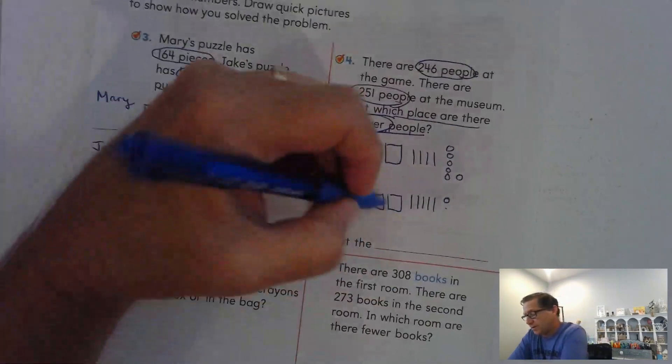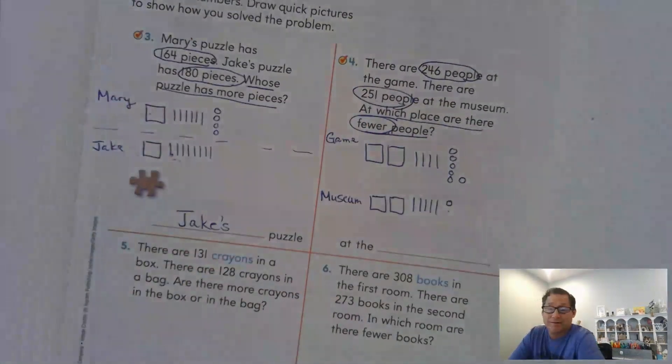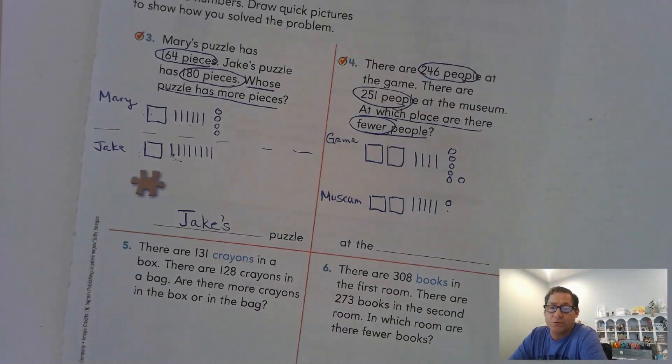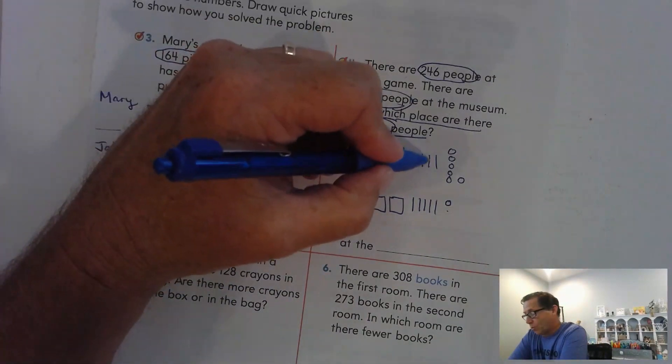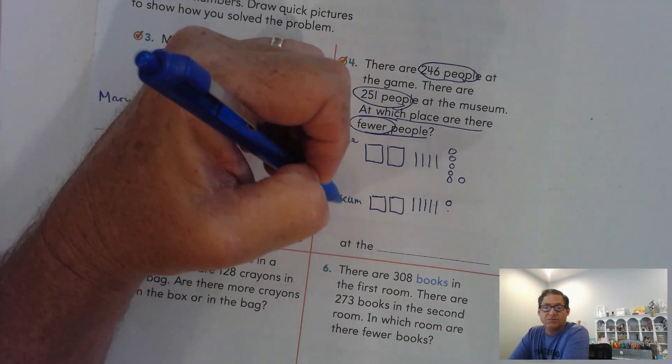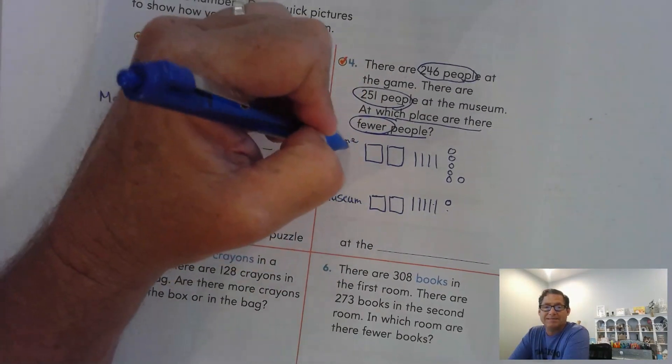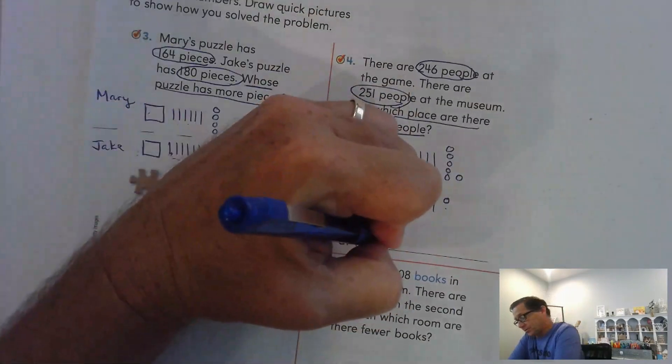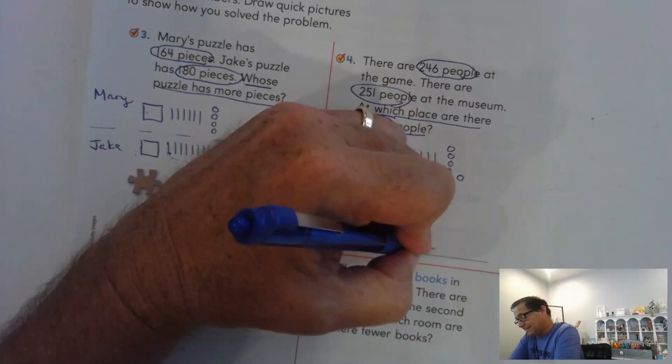We want the number that is fewer. So we want the value 246 versus 251. Which one is smaller, less? So 200, 200. That's exactly the same. So that doesn't help you find out which one is fewer. Here we have four tens. Here we have five tens. So this one is more. So that means this is fewer. So there's fewer people at the game.